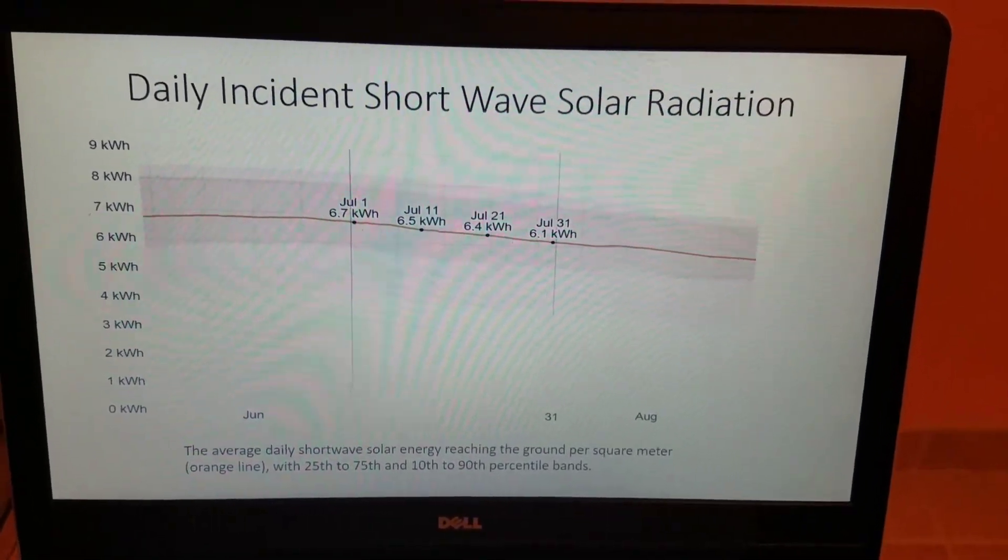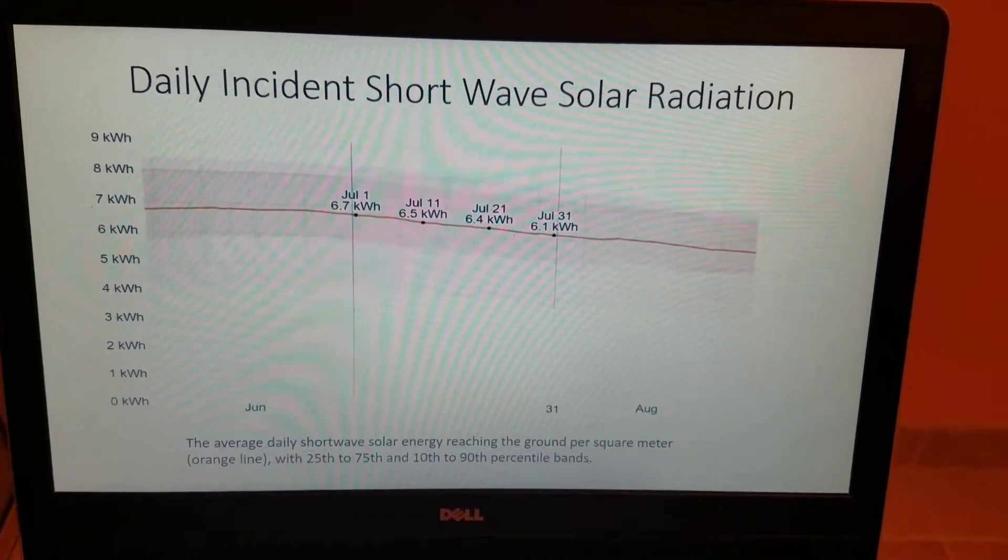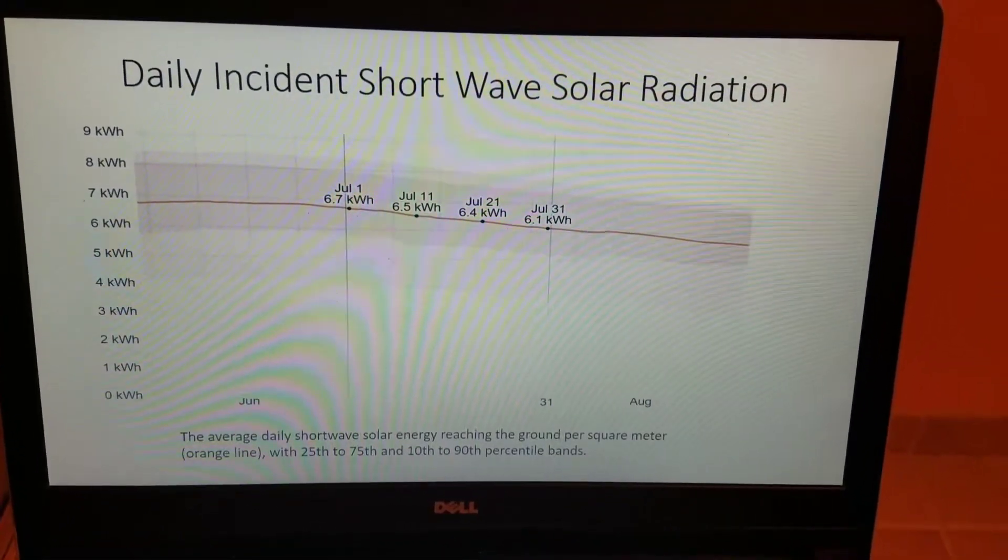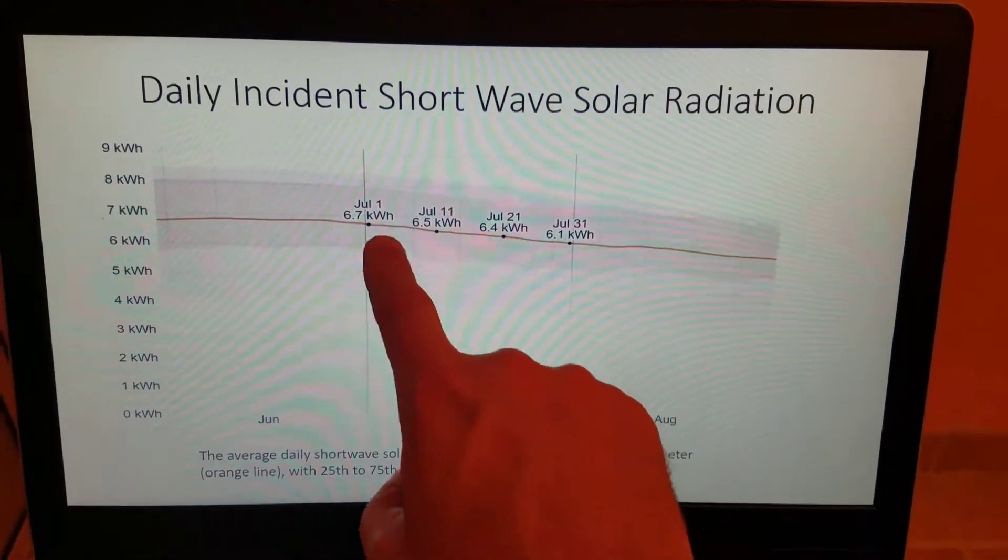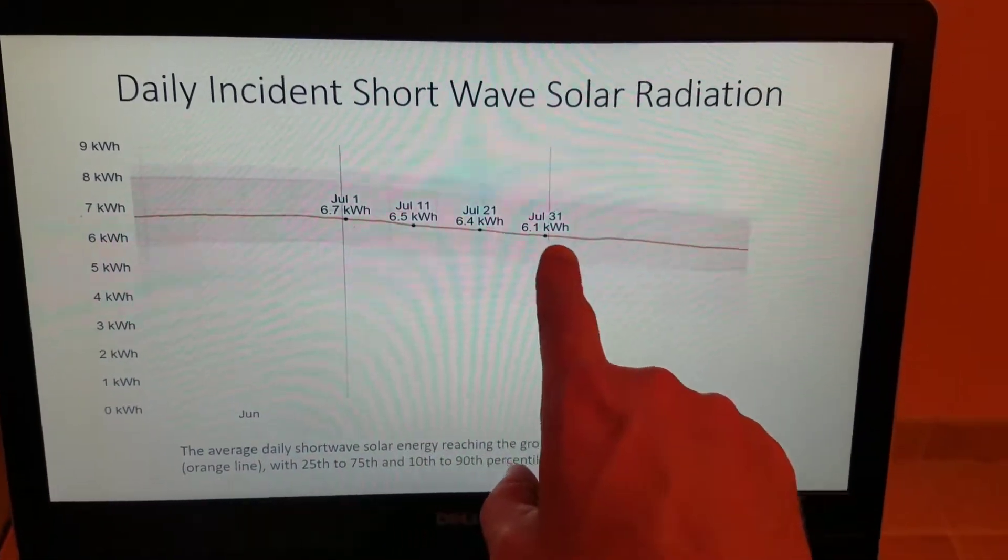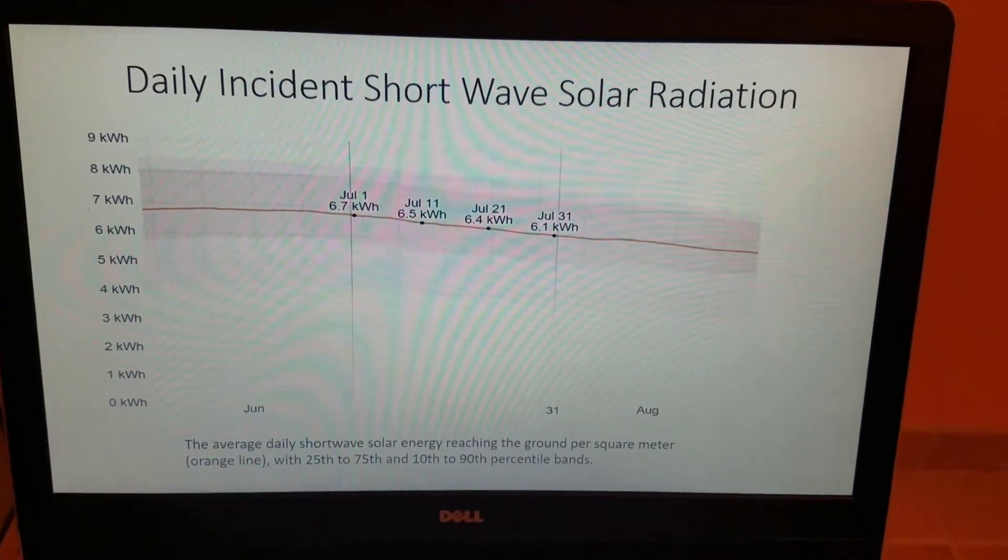And all the incident shortwave solar radiation is referring to is how bright the sun is, how much of the energy that shortwave solar radiation reaches the earth's surface in our particular latitude here in southeast Virginia. So very high at 6.7 kilowatts, again decreasing throughout the month down to 6.1.